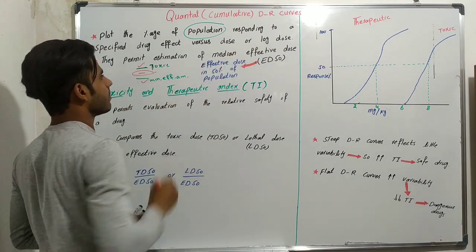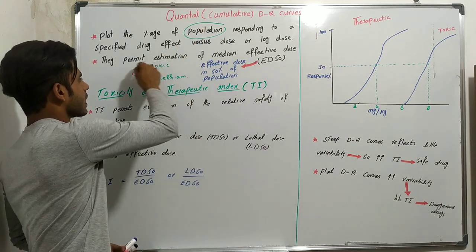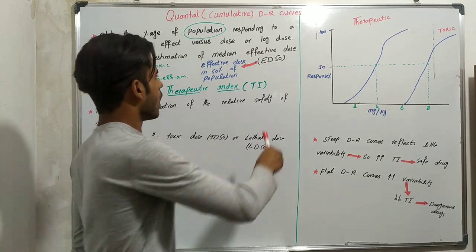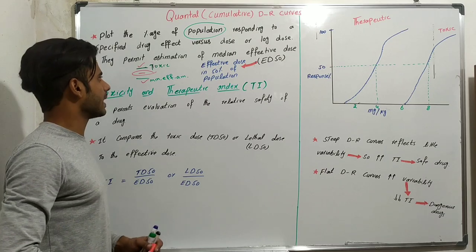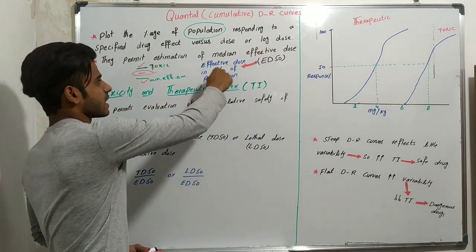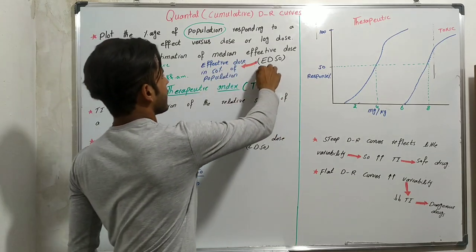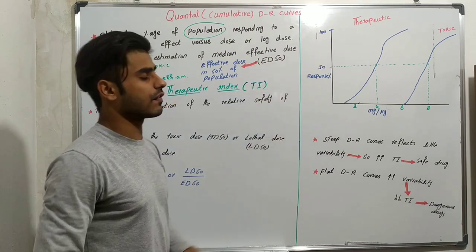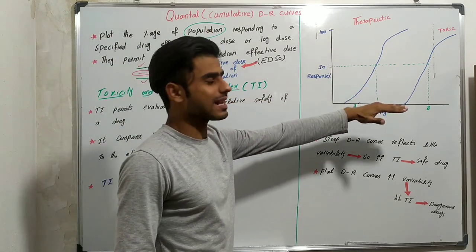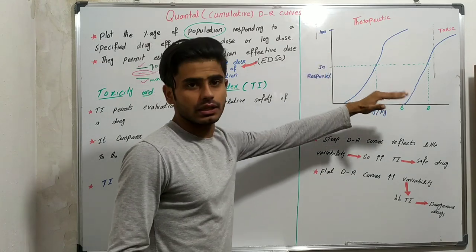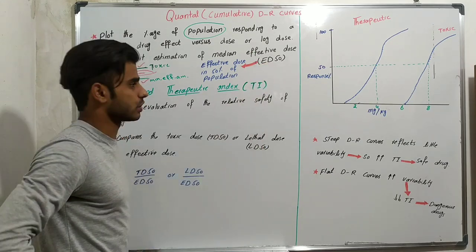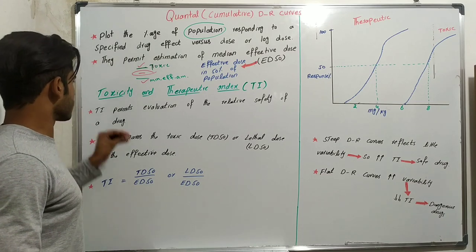The middle amount — in between toxic and minimum effective concentration — is named the median effective dose. These quantal cumulative dose-response curves help us estimate this median effective dose. We apply a dose of a drug on 50 percent of the population and get the effective dose — the dose of a drug that is effective in 50 percent of the population.